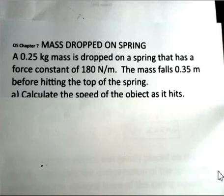In this video, we're going to release a mass from rest, let it fall vertically down and hit a massless spring, and do calculations regarding speed and amount of compression of the spring. The spring has a force constant of 180 newtons per meter. The mass is 0.35 meters above the top of the spring.